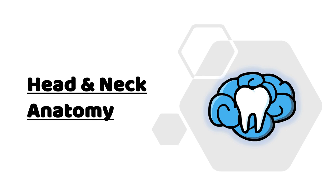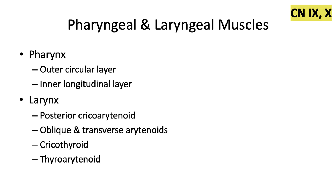Hey everyone, Ryan here, and welcome back to our head and neck anatomy series. In this video, we'll talk about the muscles of the pharynx and the larynx. Just like the soft palate muscles, all of the muscles here are innervated by cranial nerve 10, or the vagus nerve, with one exception. And this time, the exception is innervated by the glossopharyngeal nerve, or cranial nerve 9.